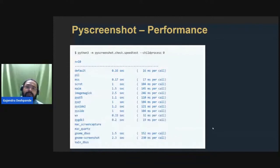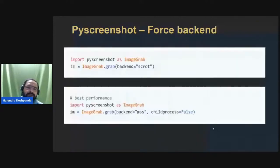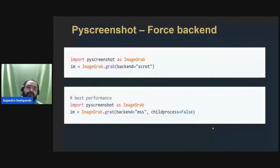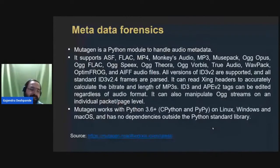For those interested in performance, you can benchmark settings — for example, n equal to 10 measures the time for taking 10 screenshots and you can choose the fastest setting. To improve performance, you can set child_process parameter to zero, or set backend equal to scrot or mss with child_process equal to False. However, in forensics, performance improvement is generally not required because the focus is on evidence extraction.